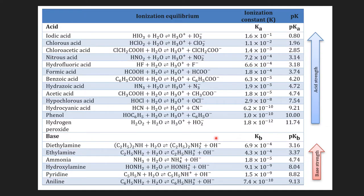This table shows the ionization equilibrium for acids and bases as well as their ionization constants. For acid, it is Ka; for base, it is Kb. You can see from this slide that the strength of acid increases when the Ka value increases. Similarly, the base strength increases as the value of Kb increases.